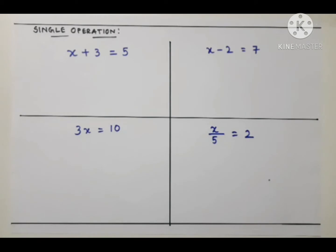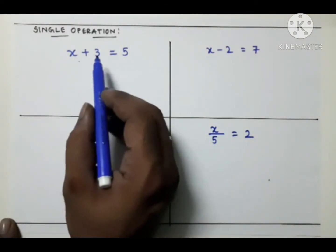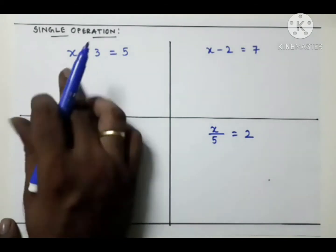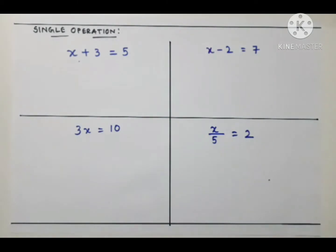Let's solve some equations using this method. Starting with single operations: addition, subtraction, multiplication, and division. The first equation is x + 3 = 5. On the left hand side we have variable x and constant 3. Our aim is to isolate x, so we need to separate the 3 from x using inverse operations.